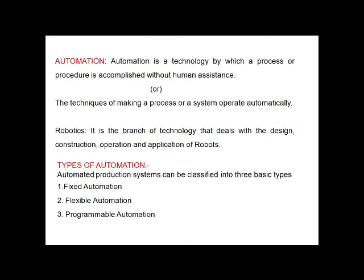Now we can discuss the types of automation. Automation can be classified into three basic types: first is fixed automation, second is flexible automation, and third is programmable automation.